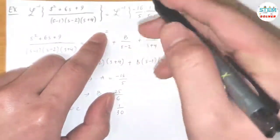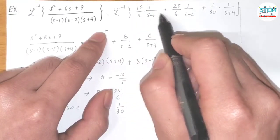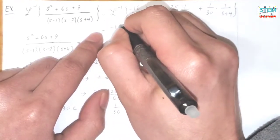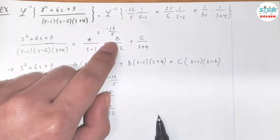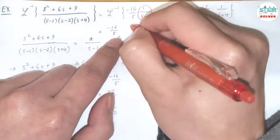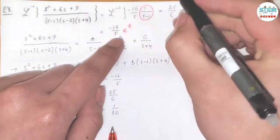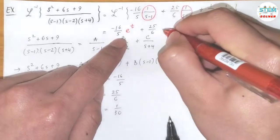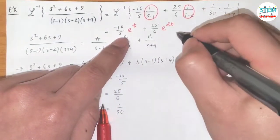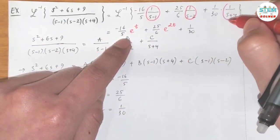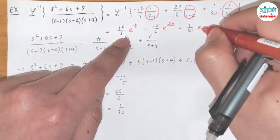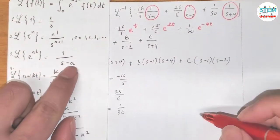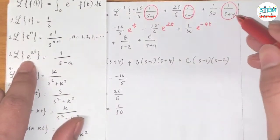Now for this one, I'm going to apply the inverse into every single term inside. I'm going to pull out the negative 16 over 5. The inverse of this is equal to e^t. This one plus 25 over 6, the inverse of this is going to be e^(2t), plus 1 over 30, and the inverse of this is equal to e^(-4t). We have the formula: the Laplace transform of e^(at) equals 1 over (s minus a). So the inverse of this will get you back to this one, which is what I have here.